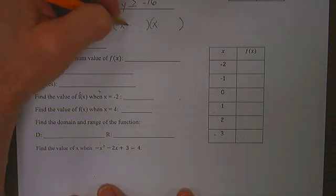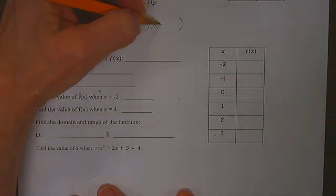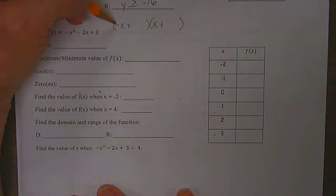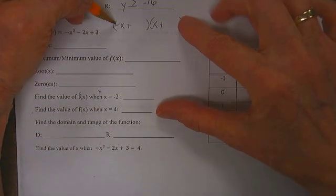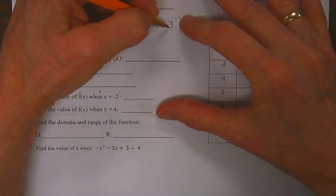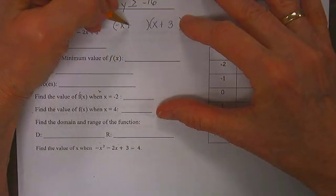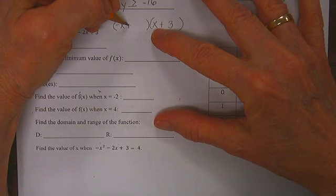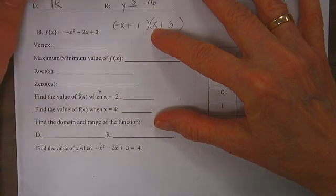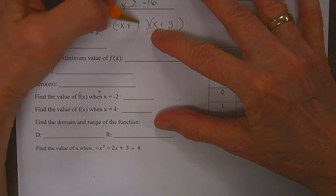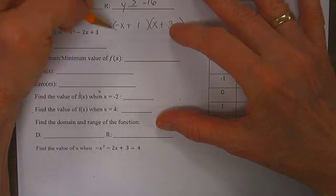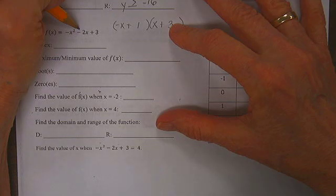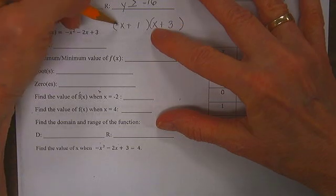I don't know which is which, so I'm going to try both positive. Negative x plus 1 and x plus 3. 1x minus 3x would be minus 2x. This could be it.